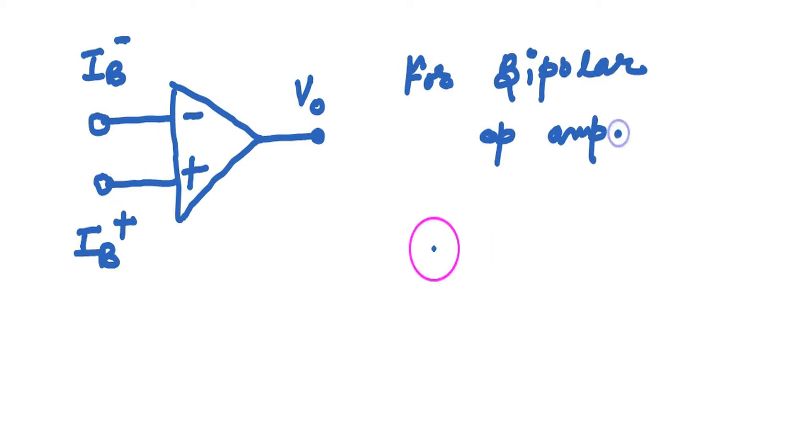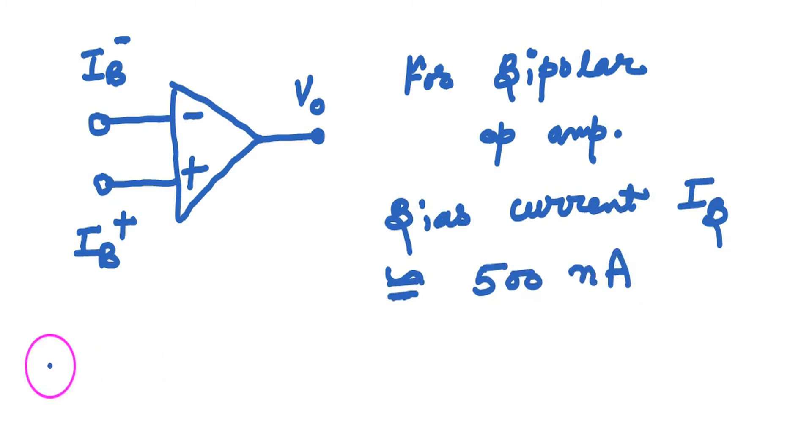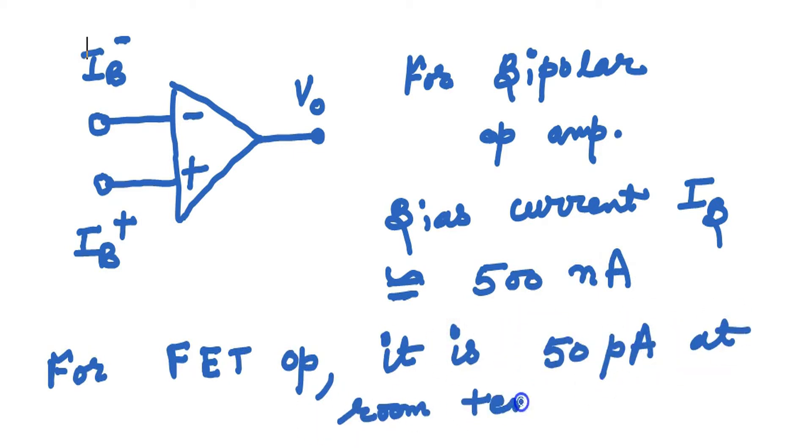If the transistor is made of bipolar transistor, then the bias current is approximately up to 500 nanoamperes. If it is made of FET, then the bias current is 50 picoamperes. For FET, the bias current is quite less.